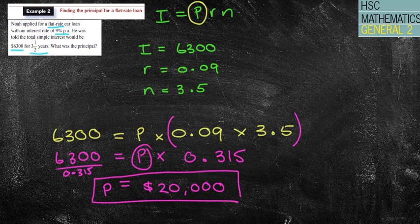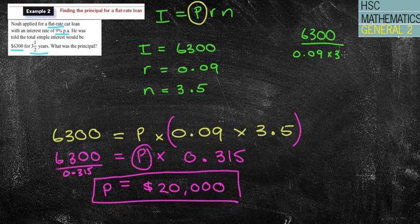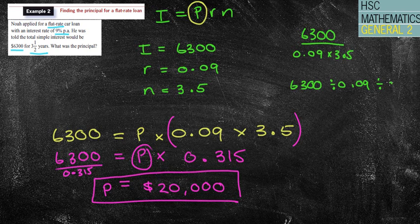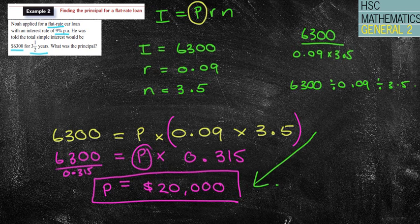Now what you may have done, which is no dramas at all, you might have originally just pulled the 0.09 and the 3.5 to the left-hand side and done some sort of calculation like this, 6,300 divided by 0.09 times 3.5. That would be the same thing. You might have done this in your calculator. 6,300 divided by 0.09, pressed equals, divided by 3.5, and again, that would generate the exact same answer as $20,000, so pretty straightforward.